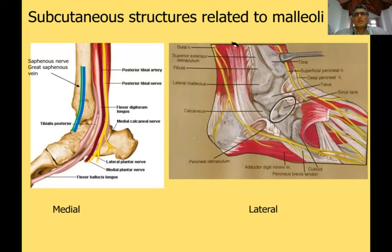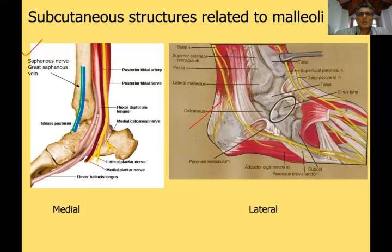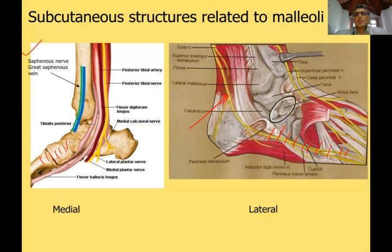To summarize subcutaneous structures at the malleoli: the saphenous nerve lies in front of the great saphenous vein at the medial malleolus. The sural nerve supplies the lateral aspect of the foot, just as the saphenous nerve supplies the medial aspect. The superficial peroneal nerve supplies the dorsum of the foot.